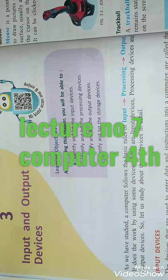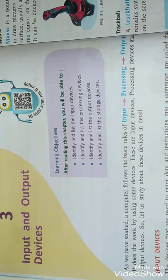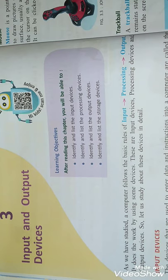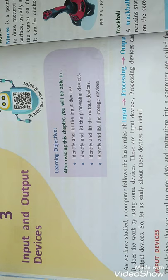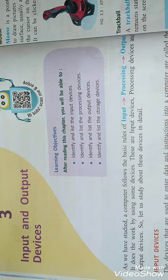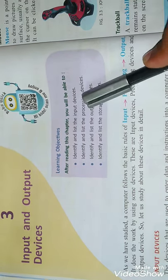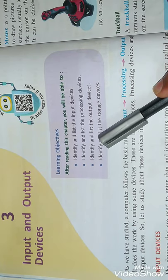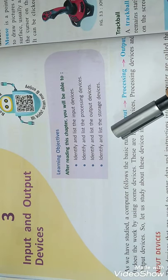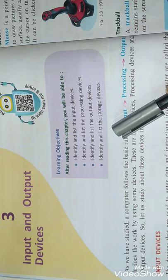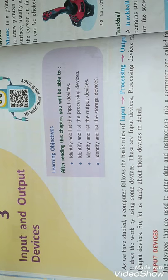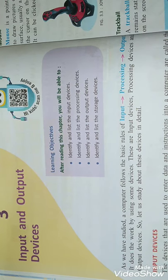Assalamu alaikum students, today we will discuss computer studies for class, unit number three. It is about input and output devices. In this chapter, our goals are: first, identify and list the input devices; second, identify and list the processing devices; third, identify and list the output devices; and fourth, identify and list the storage devices.